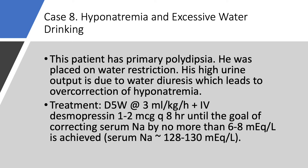When you get someone with primary polydipsia, be careful about fluid restriction. It's chronic — you don't need to correct fast. Maybe you don't use fluid restriction at all. If you do limit it, don't go as low as 1,200 ml per 24 hours. Maybe two liters a day is fine, because these patients may be drinking five, six, or even ten liters a day.